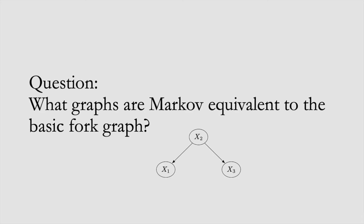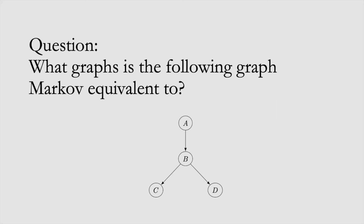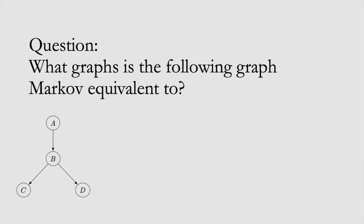We'll see an algorithm for discovering this essential graph from data based on conditional independencies. But first, let's go through a few questions and examples on Markov equivalence. The first question is: what graphs are Markov equivalent to the basic fork graph? The second question is: what graphs are Markov equivalent to the basic immorality? The answers to both are a few slides back. The next question is: what graphs is the following graph Markov equivalent to? The way we do this is try to flip edges and see if we get graphs that still have the same skeleton and immoralities.